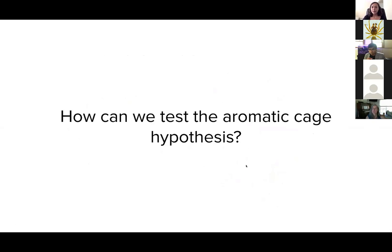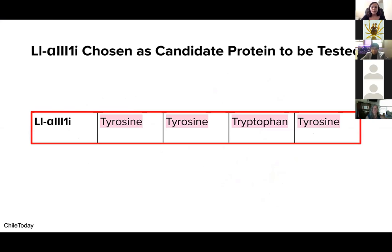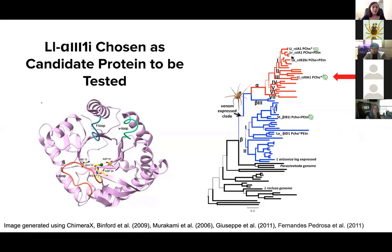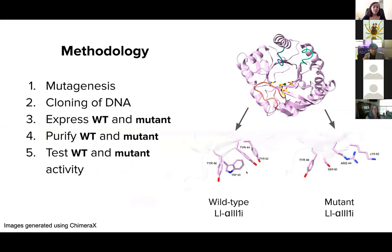So how can we test this hypothesis? I've chosen a candidate protein called LL-alpha-3-1i from Loxosceles laeta, which is the Chilean brown recluse spider. A number of things make this a great candidate: it's been structurally characterized, and it comes from one of the most dangerous and potent brown recluse spiders, making it medically relevant. This is an outline of the methodology we've used to begin answering this question. I'll expand briefly on mutagenesis and how we test for protein activity, while cloning, expressing, and purifying these proteins follow standard protocol.